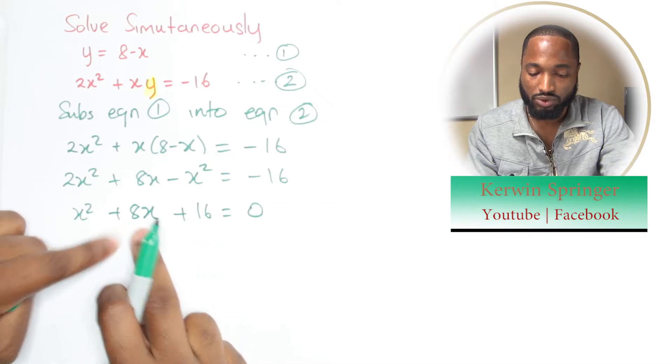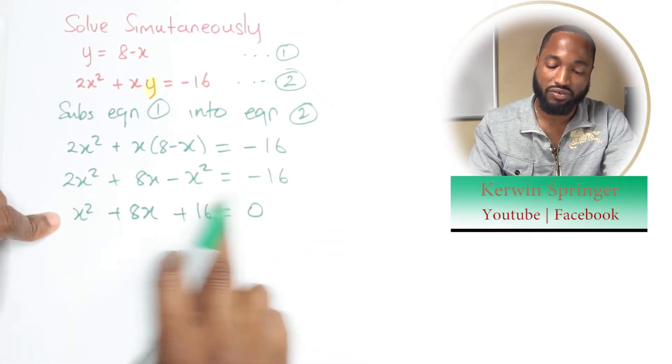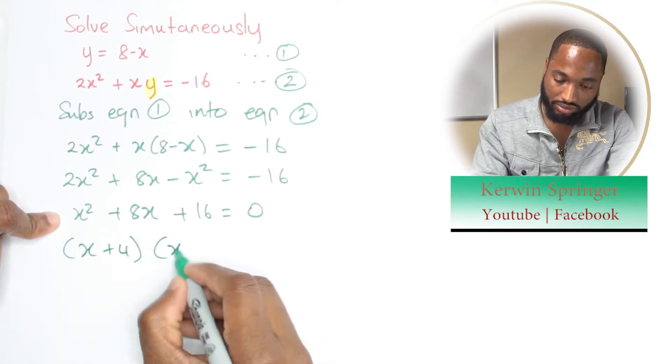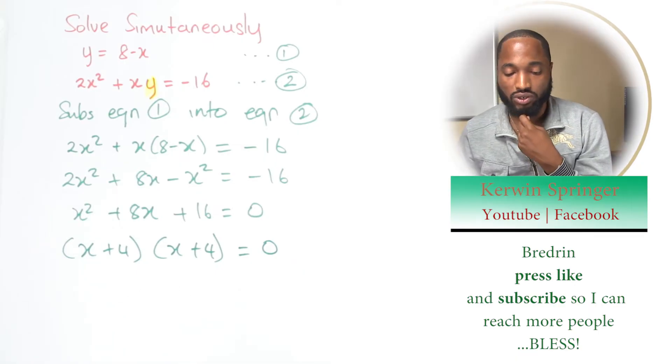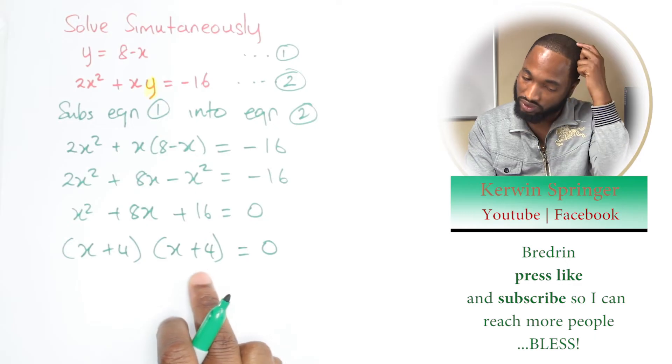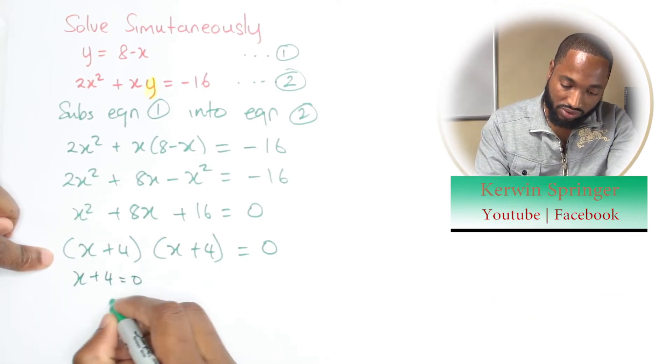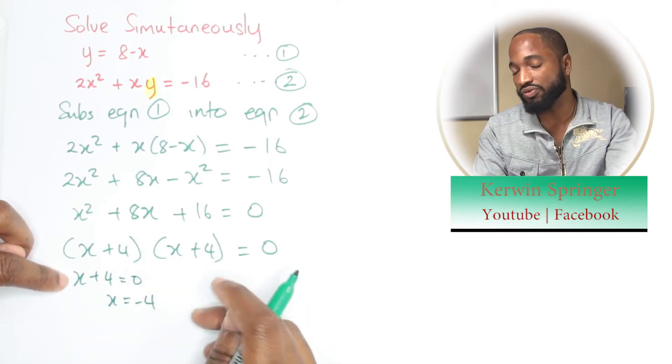Two numbers that add to give me 8 but multiply to give me 16—that's how you solve this quadratic. And you should get x plus 4, x plus 4. This will give me x plus 4 equals 0, so x is equal to negative 4 in both cases. I can just do it for one.